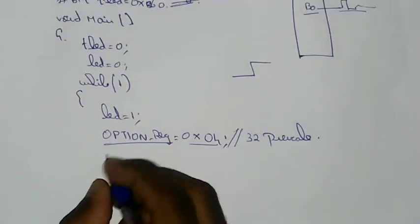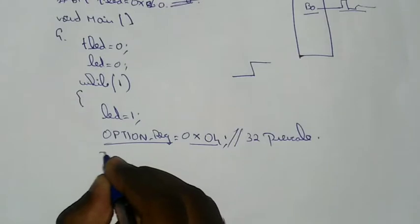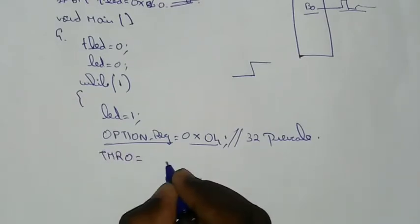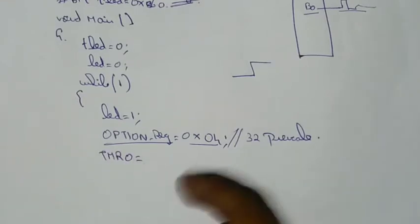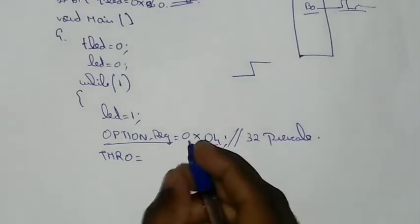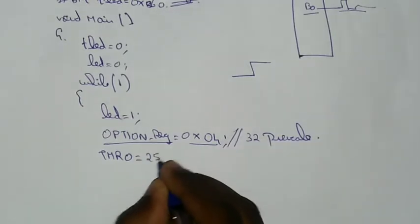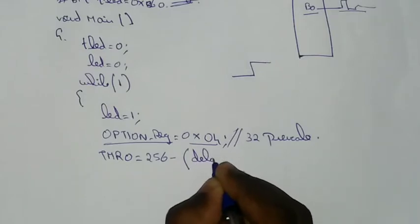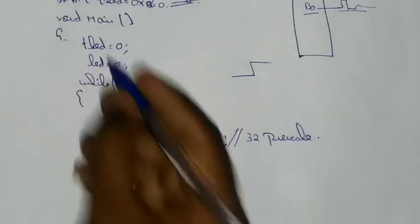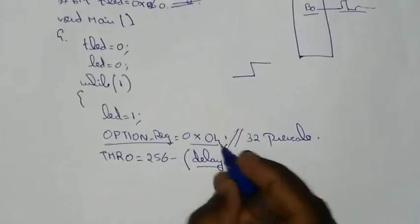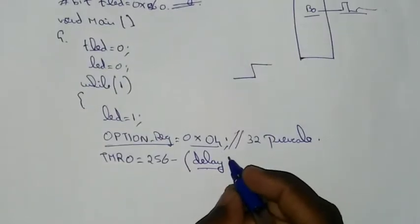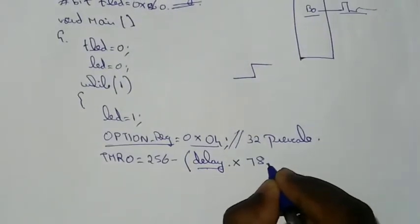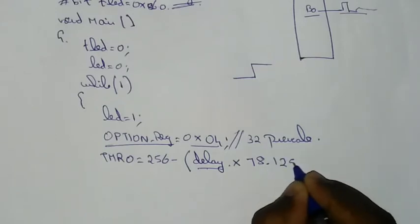Now, if we have the formula, TMR0 — if you have the value added to the formula, simply say the formula is 256 minus delay. Return the delay into 78.125.